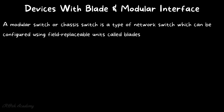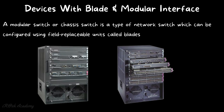A modular switch, or chassis switch, is a type of network switch that can be configured using field replaceable units called blades. The chassis switch is a box-type network switch containing multiple field replaceable units. We can remove these blades and install any switch module as per our requirement. These are called devices with blade and modular interfaces.